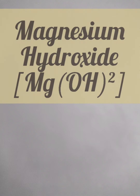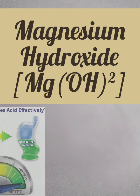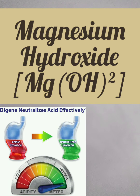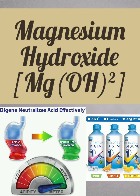Magnesium hydroxide, which is also known as milk of magnesia: it helps to treat acidity. It is present in digene.